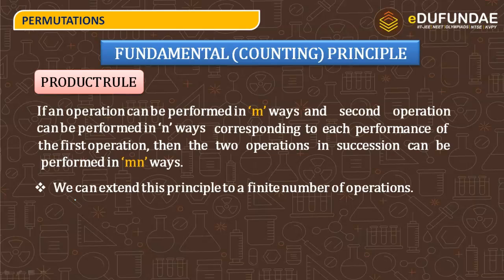For example, if there are two operations: going from Chandigarh to Delhi via a stoppage like Kurukshetra — Chandigarh to Kurukshetra has 15 routes, and Kurukshetra to Delhi has 20 routes — then the total number of ways to go from Chandigarh to Delhi is 20 into 15. That is the product rule.